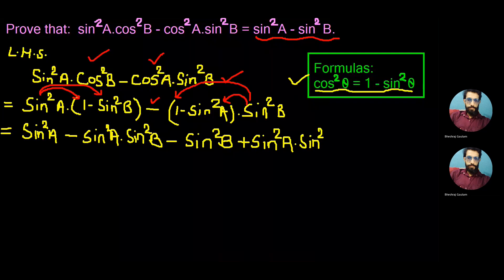As we need our right hand side to be expressed all in the sin form, we converted cos in the equation also in the sin form. Now doing so, we can cancel the minus sin²A·sin²B with the plus sin²A·sin²B. And finally there remains sin²A - sin²B.